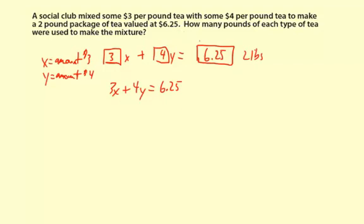And there's another equation that we can use related to the amount, or the weight of the tea, because the amount of the $3 tea plus the amount of the $4 tea used, the total weight has to be two pounds. So I could just say X plus Y is two. X being the amount of $3 tea used in pounds, and Y the amount of pounds of the $4 tea.